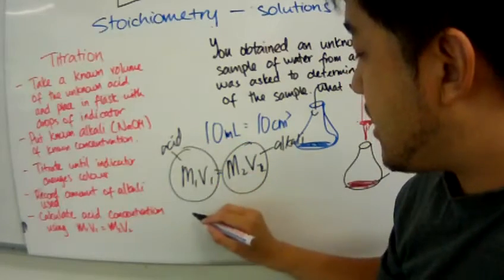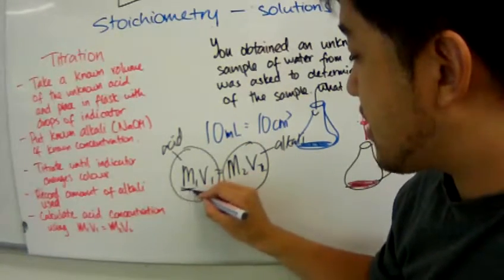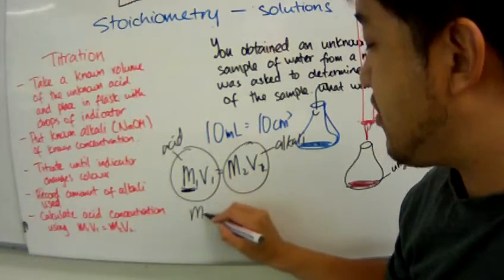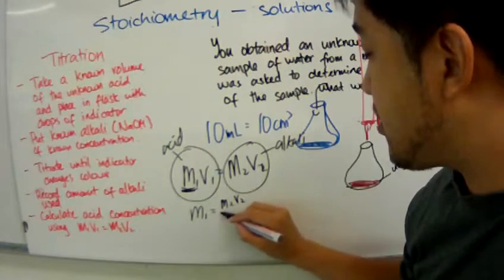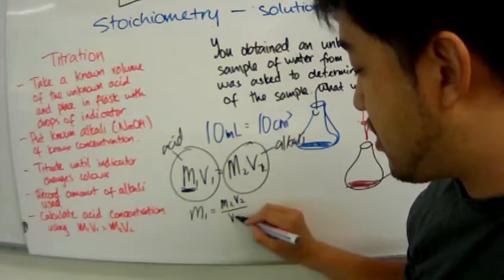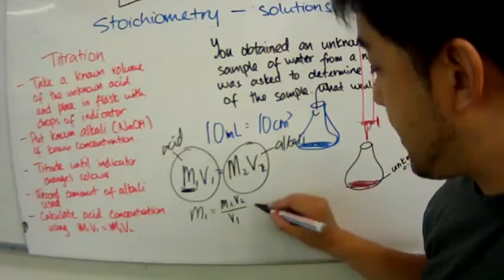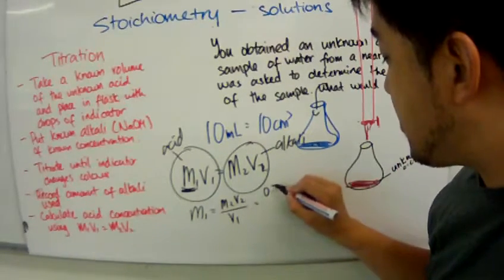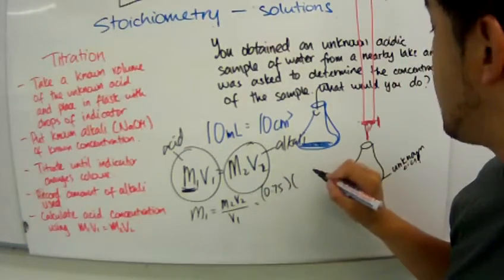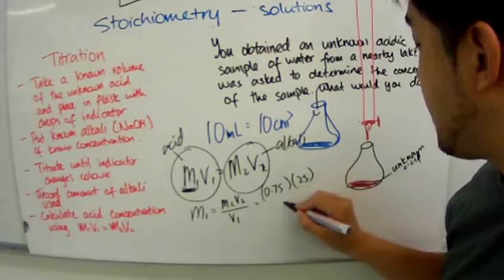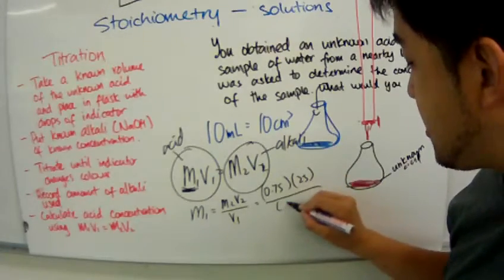I can now determine the concentration of the acid by rearranging the formula to M1 equals M2V2 over V1. M2 has been given to us 0.75. V2 is 25. And V1 is 10.